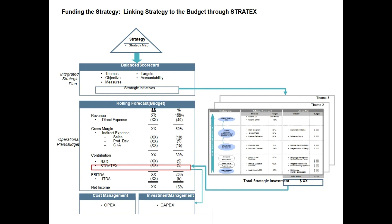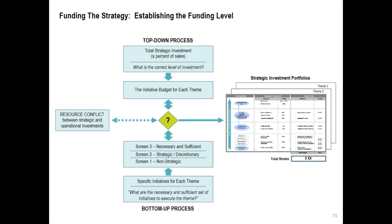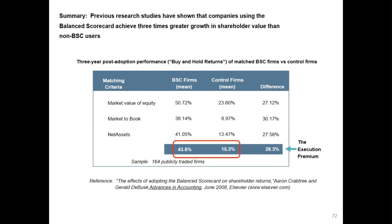Funding the strategy is very critical to execute strategic initiatives and portfolios. Look at the top-down and bottom-up processes — the resource conflict can be balanced and arrived at the appropriate funding level. Some research results are illustrated for better understanding.